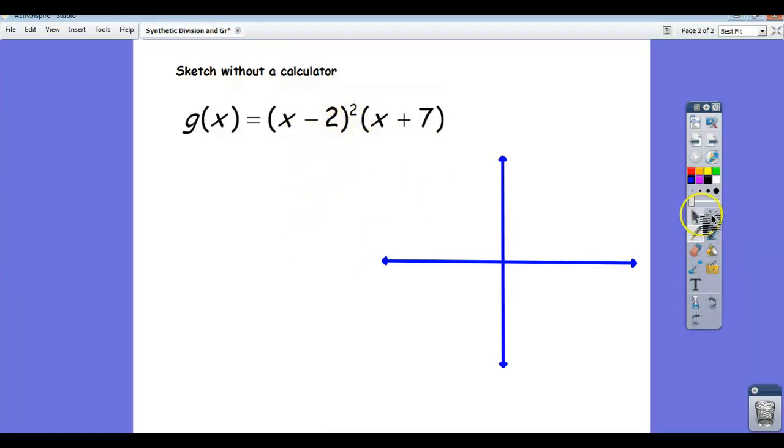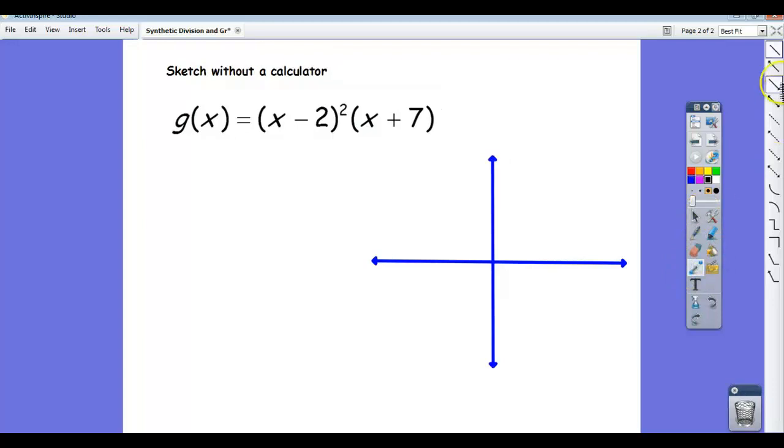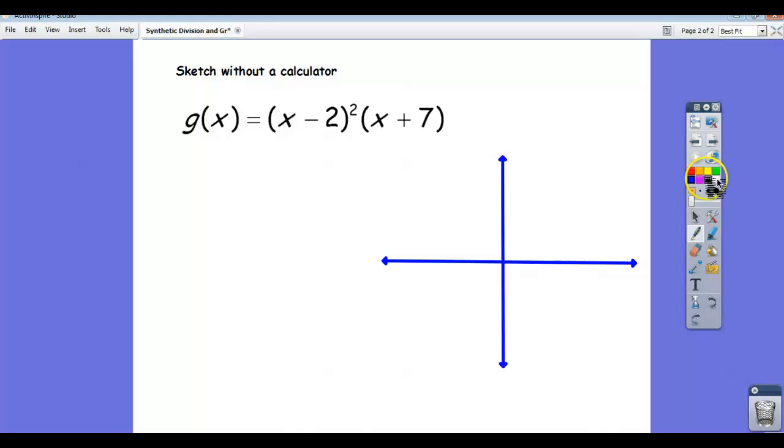And later on we're going to do higher degrees. But the big idea is when you have a polynomial that's in factored form, the nice thing about that form is it tells you the zeros, and once you know the zeros, you can analyze what's happening around those zeros to figure out generally what the function's doing, and that's how you come up with your sketch.